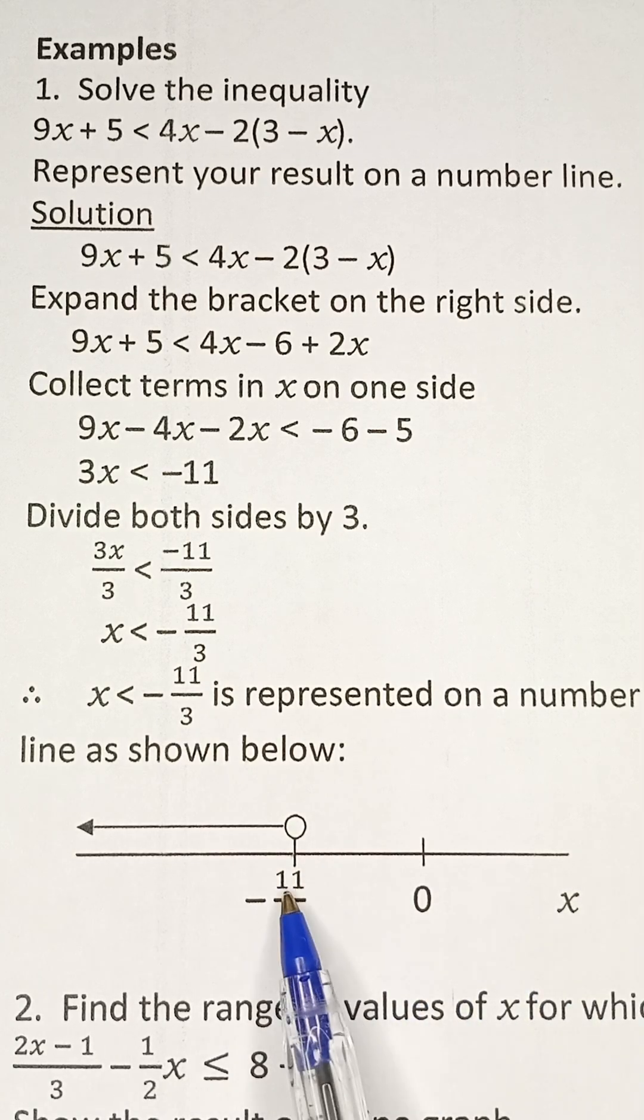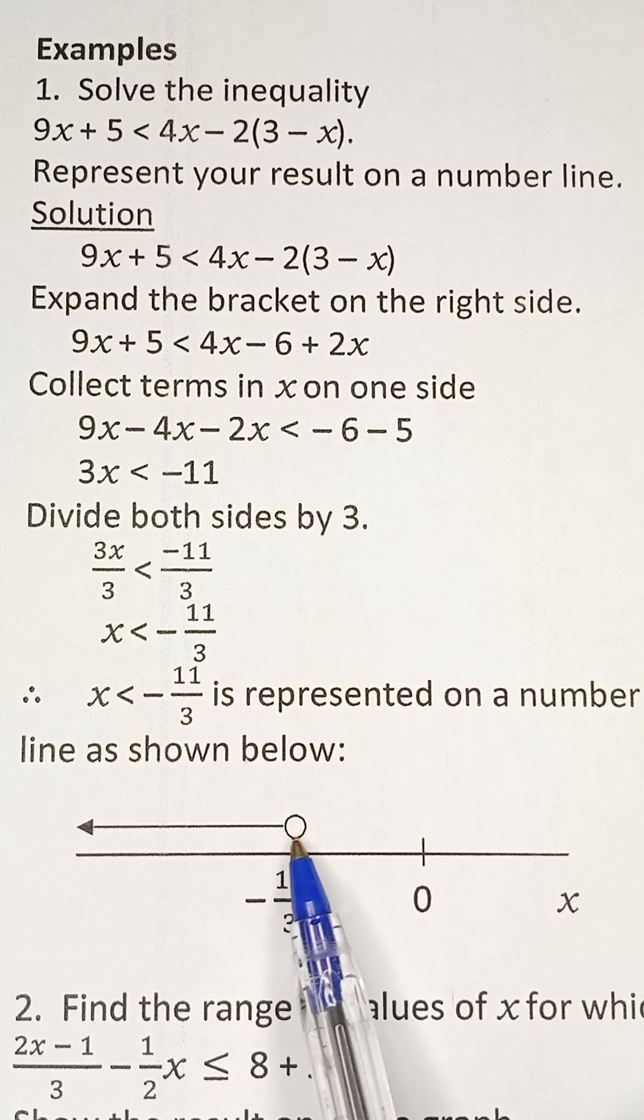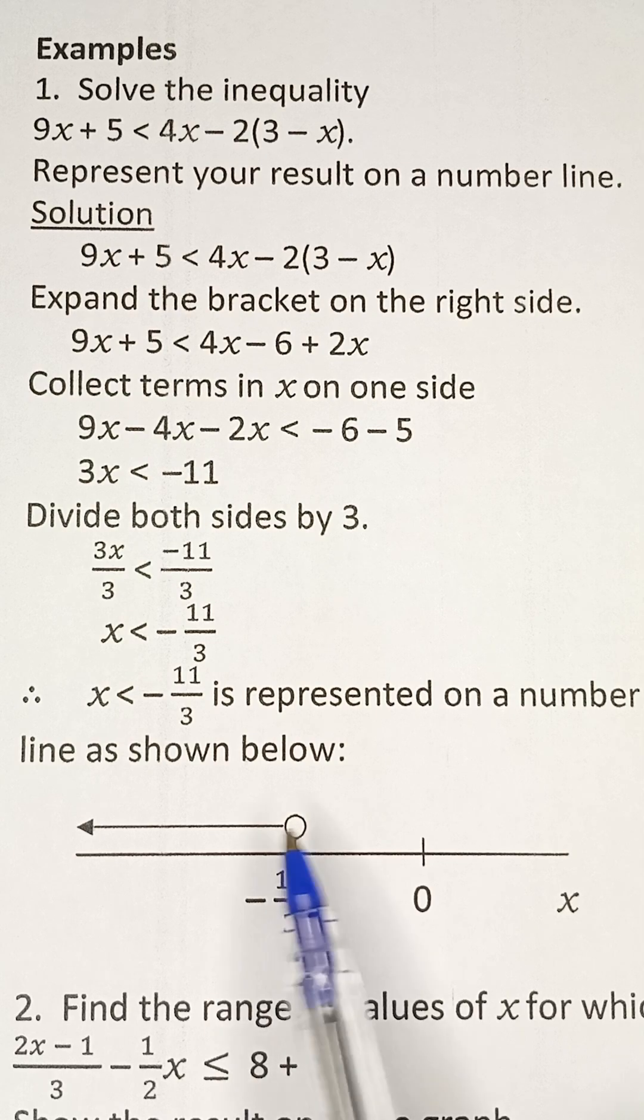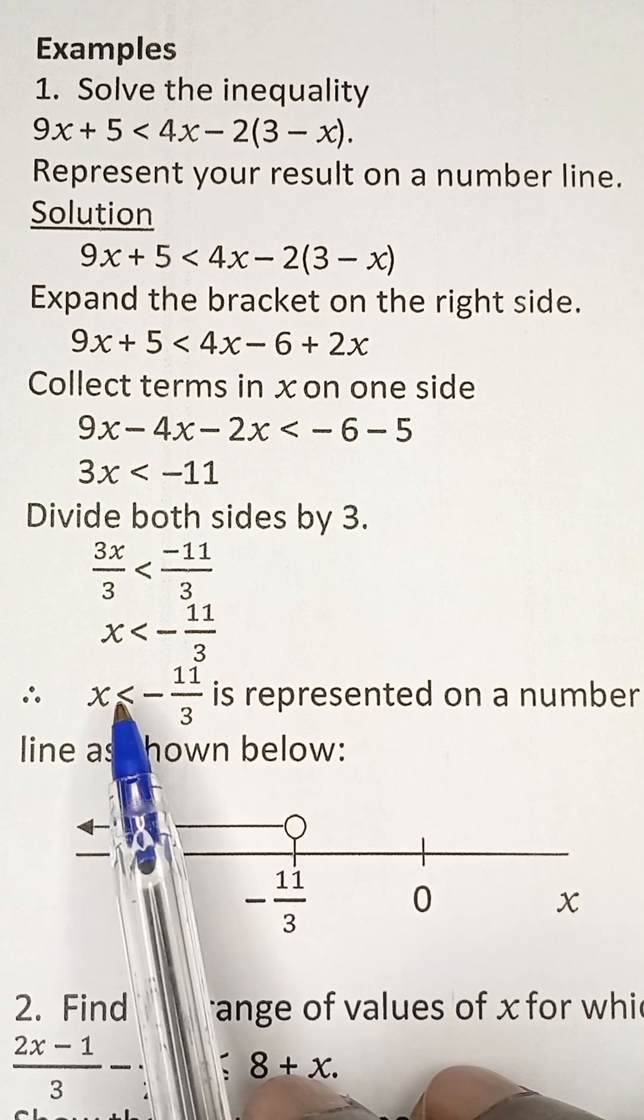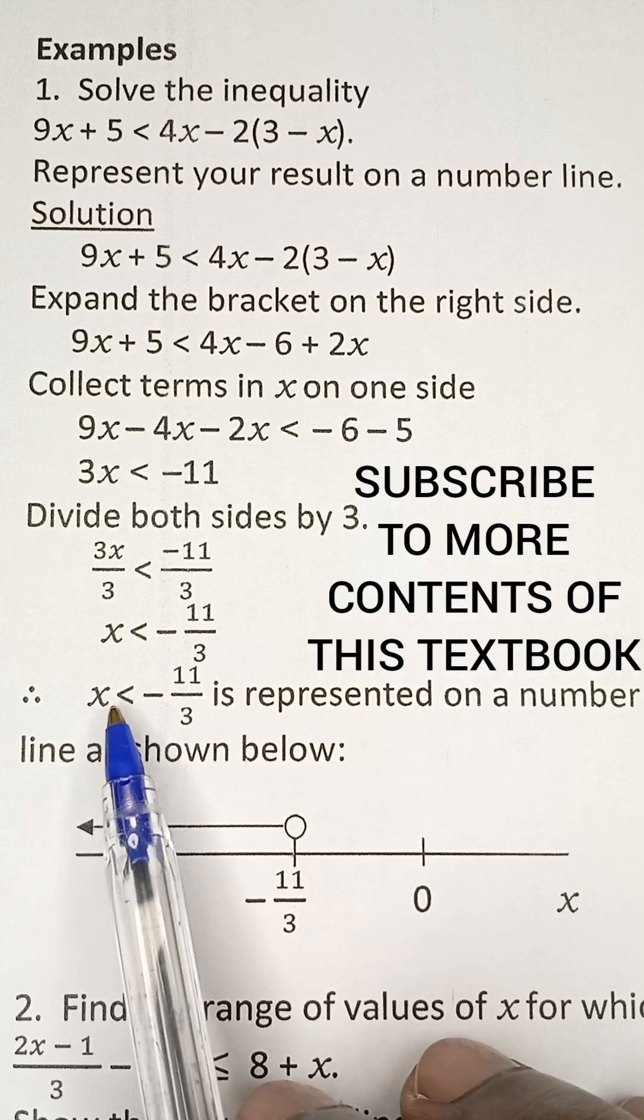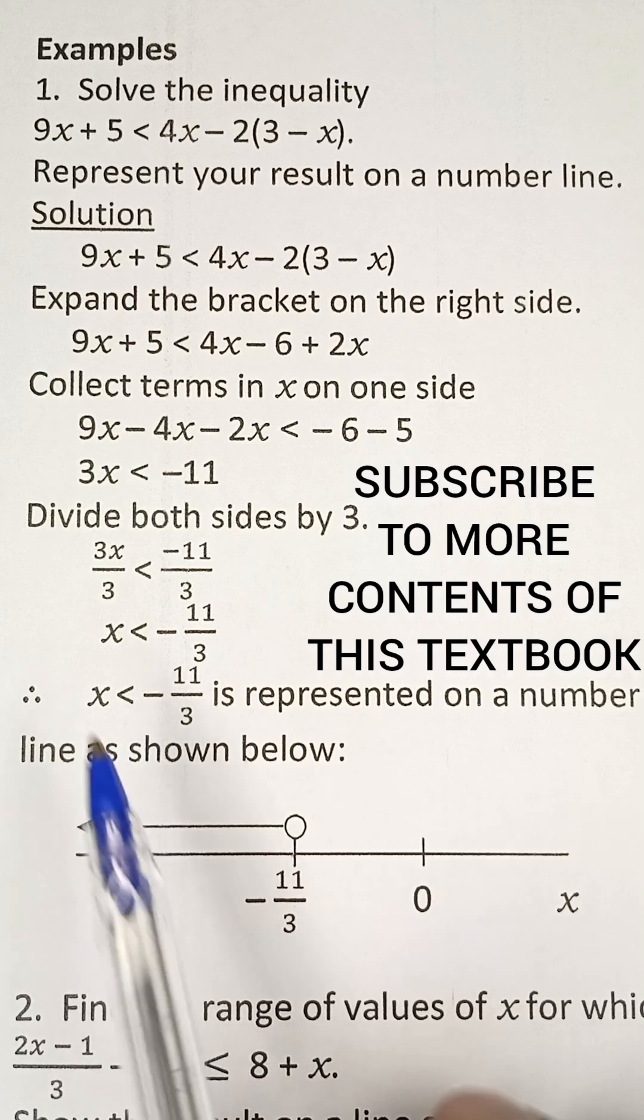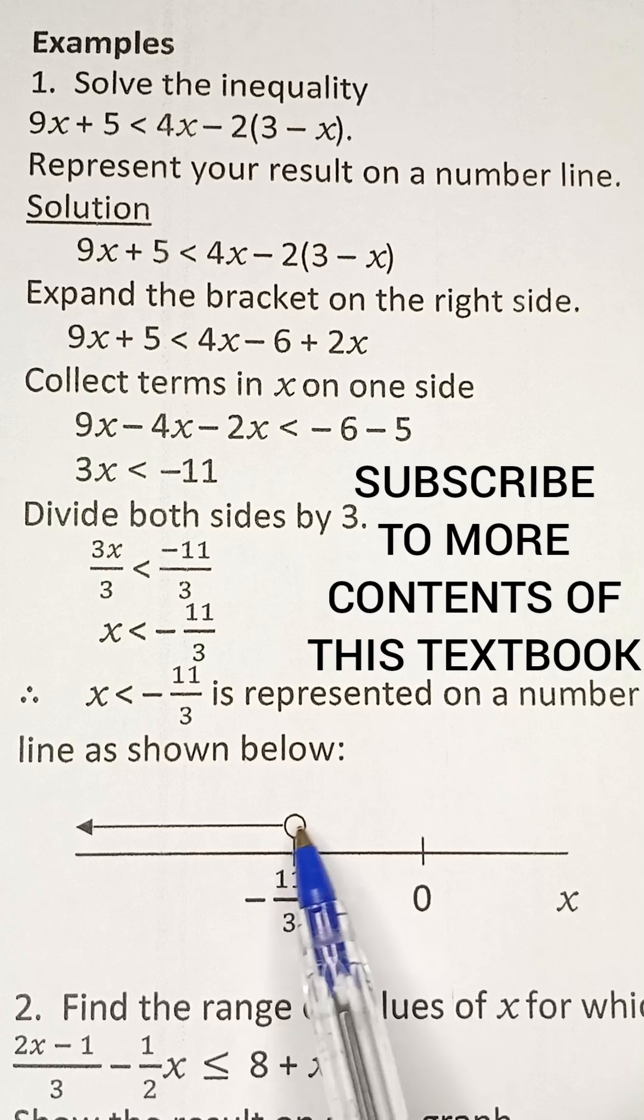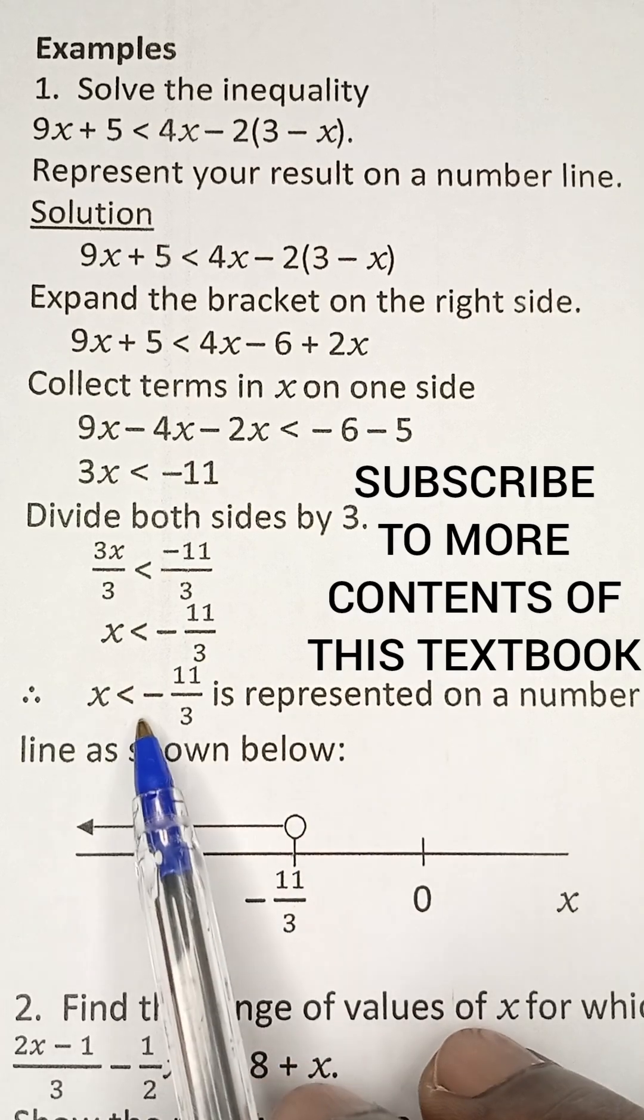Now, after writing your value that you have obtained on the number line, you now introduce a small circle at that point. Now, you only leave the circle unshaded when you have less than or greater than. But if the question had been less than or equal to, in that case, you have to shade this circle. But we are not shading this circle now because it is just less than.